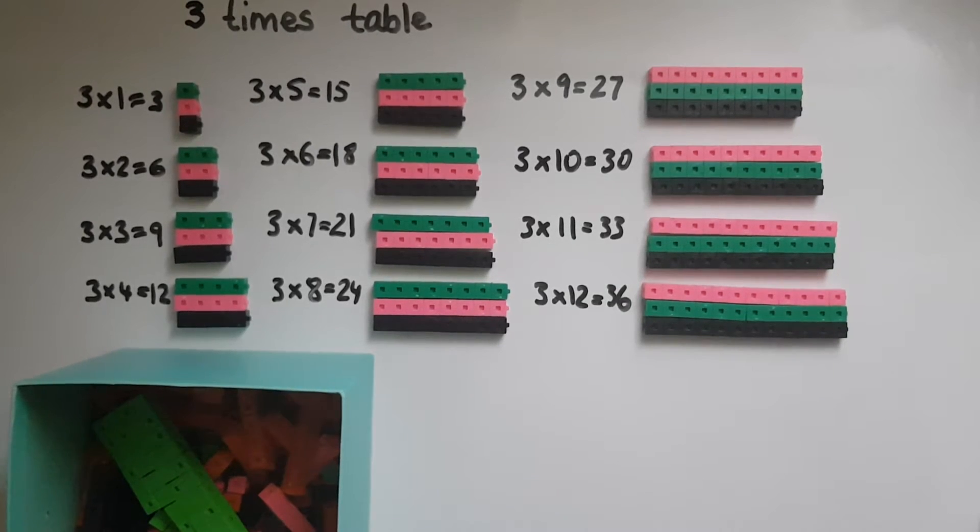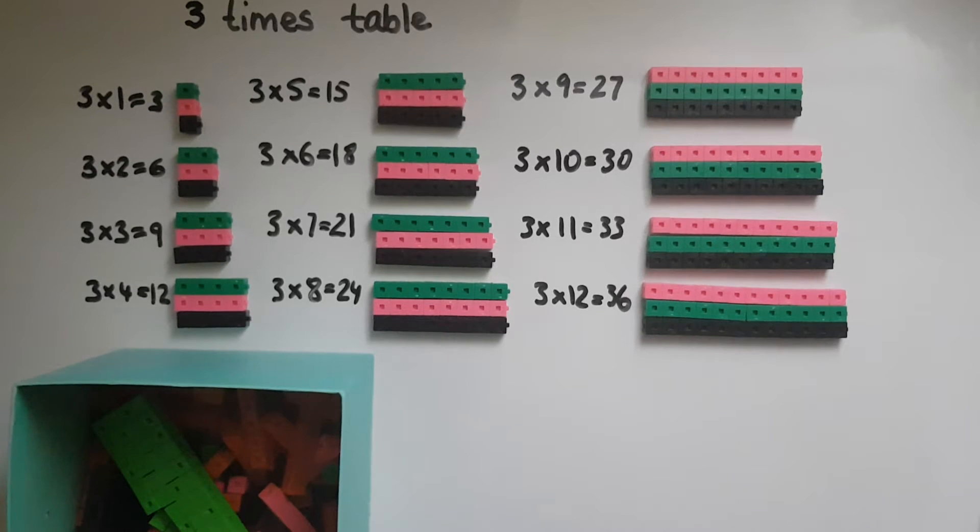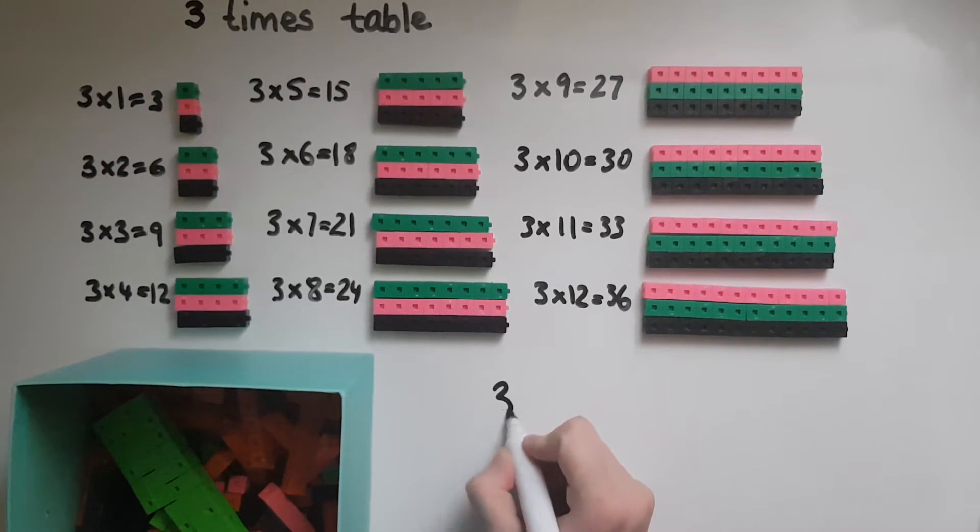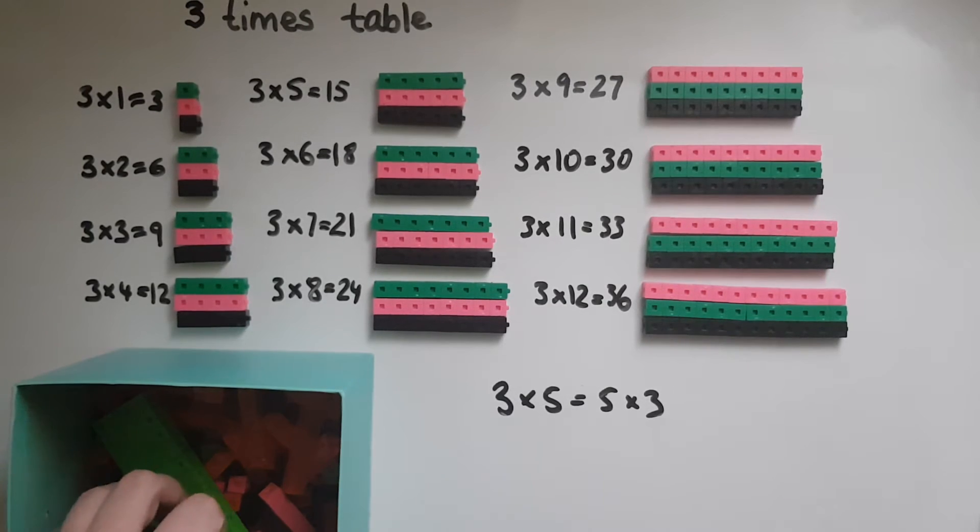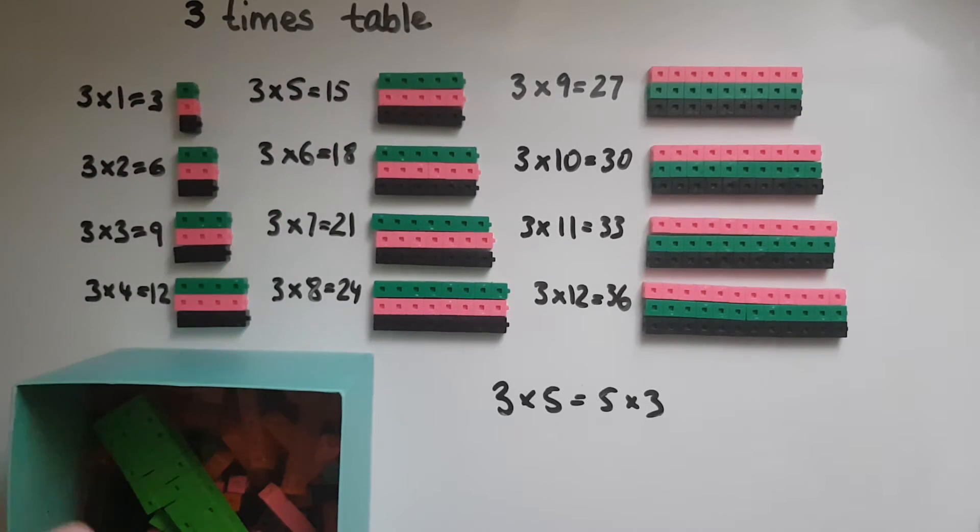So another thing to remember is that 3 times 5 is the same as 5 times 3. So putting my hand in three times and getting five each time - five and five and five makes 15.